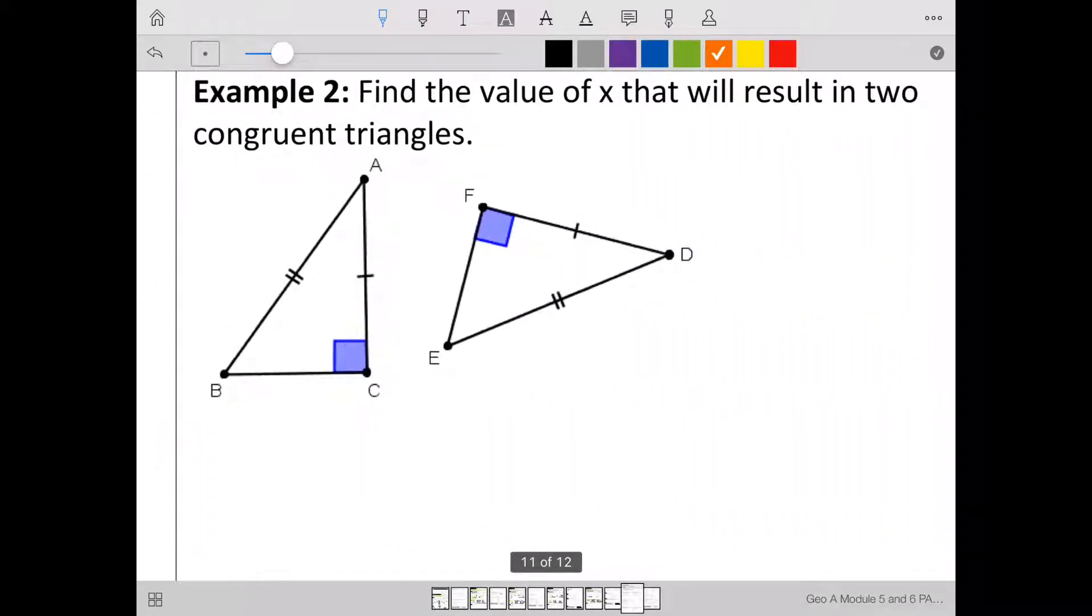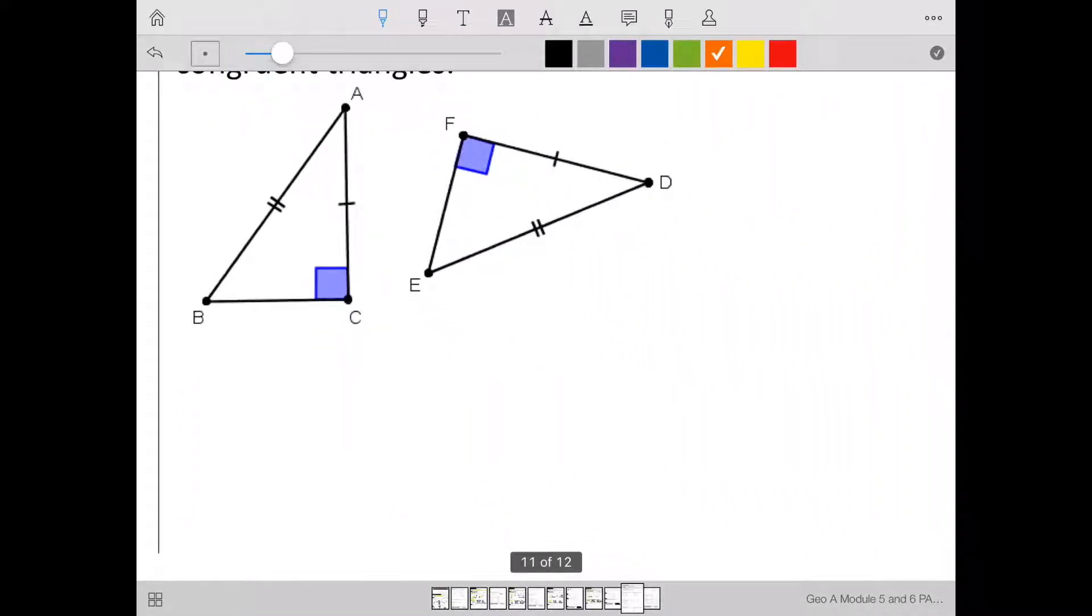Example number two. Again, we're going to look at these two triangles and decide if they are congruent. Good thing we have a right angle.